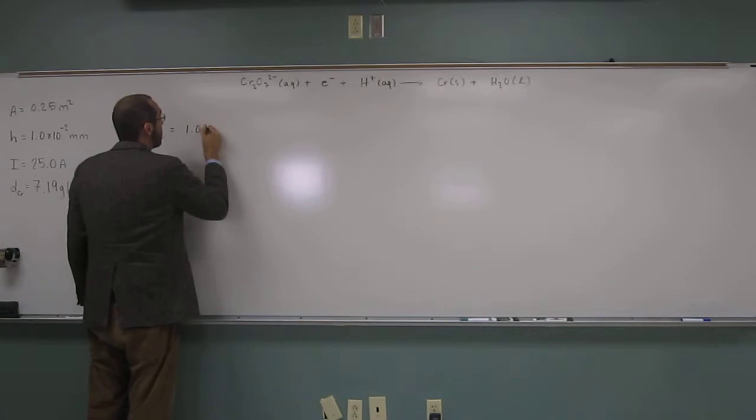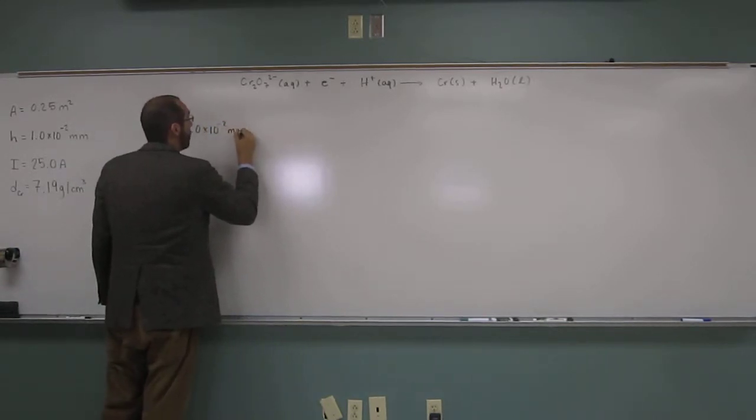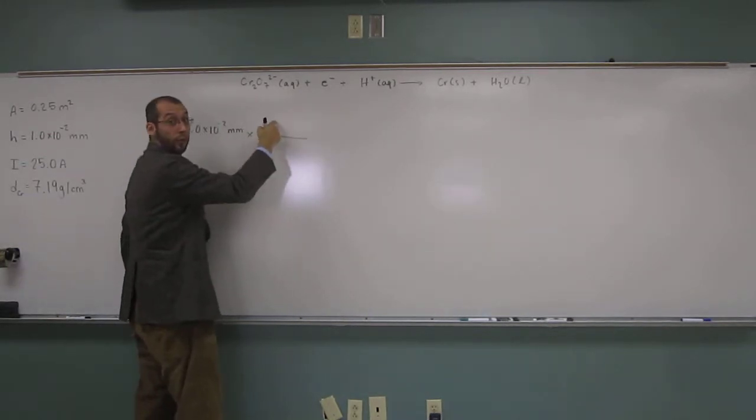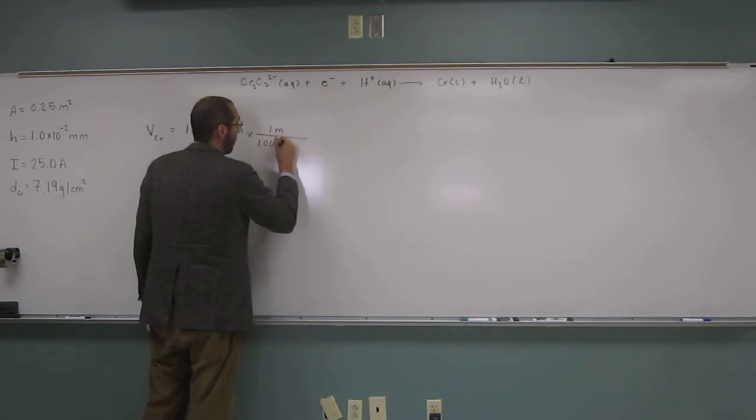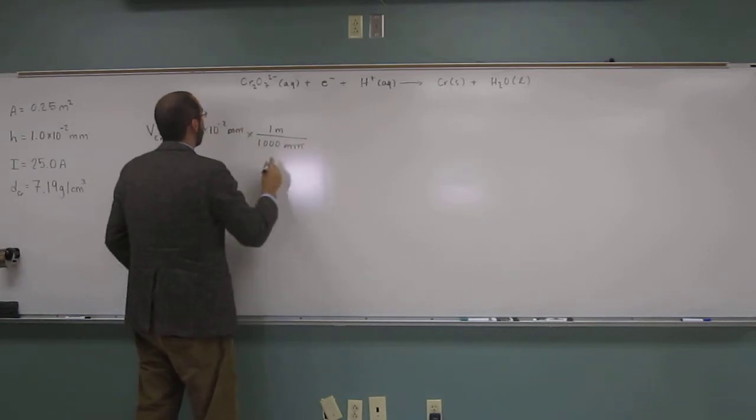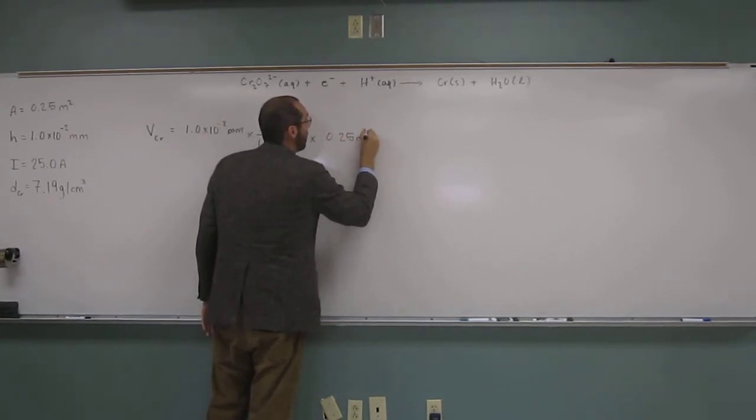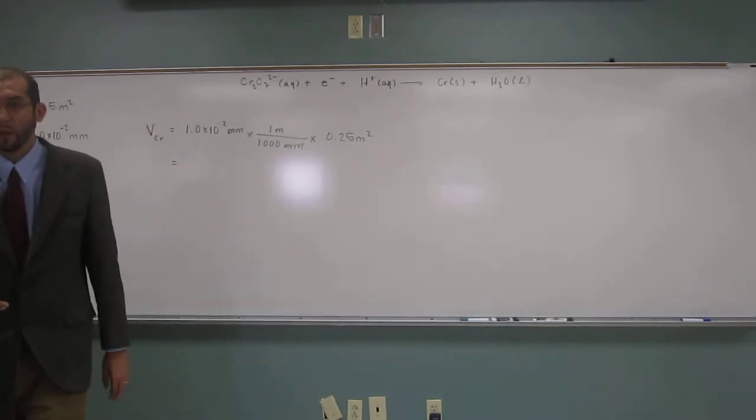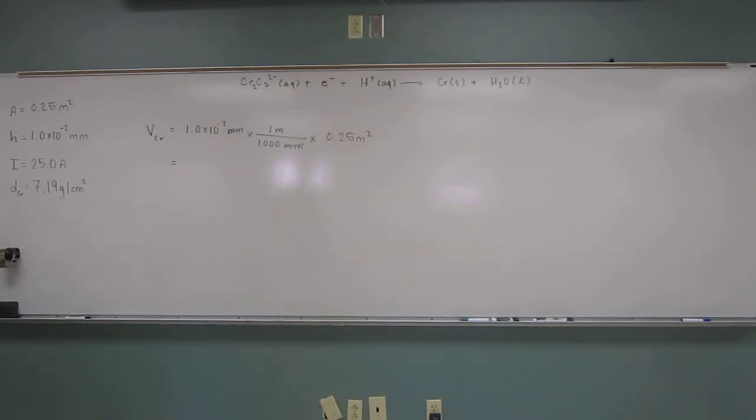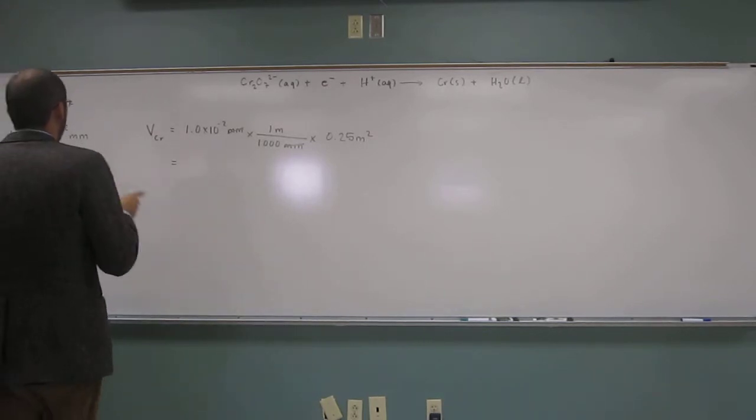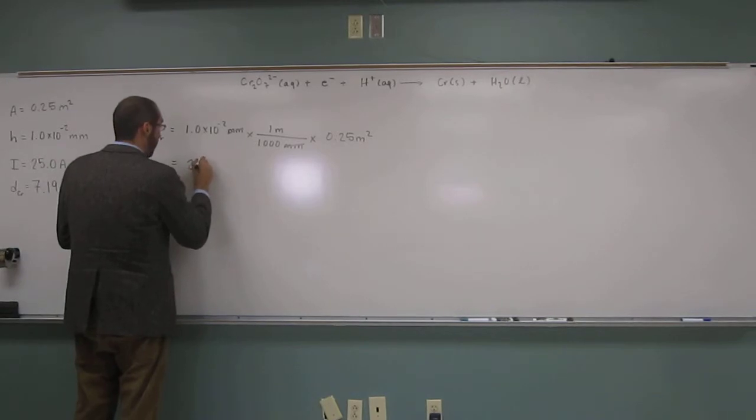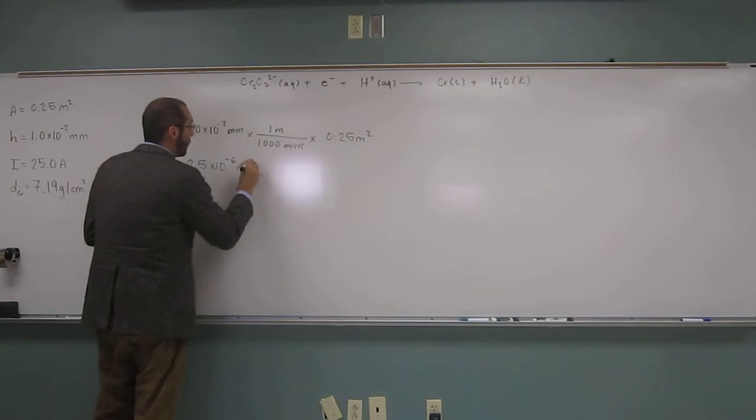Since this one's in millimeters, that one's in meters squared, I'm going to get the volume in meters cubed. So 1.0 times 10 to the negative 2 millimeters, let's convert that to meters there. So 1 meter, 1,000 millimeters. So that's in meters now. So let's now just multiply 0.25 meters squared. That will give me the volume of chromium in meters. So we get 2.5 times 10 to the negative 6 meters cubed.